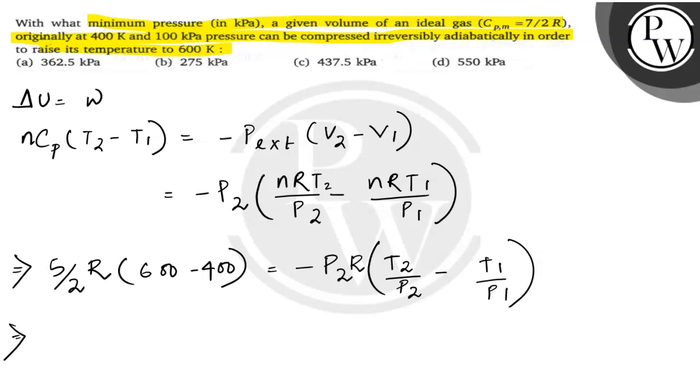Yahaan pe T2 is how much? T2 is 600 Kelvin, T1 is 400 Kelvin, and P1 is given as 100 kilopascal or 100 × 1000 pascal. That would be 10^5 pascal, thik hai?